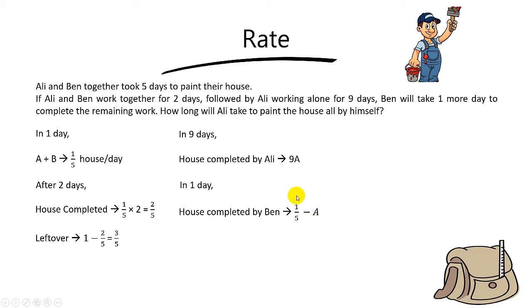And now we know that together, they will complete the leftover which is 3 out of 5. So we can form an equation. And what is the equation? It will be 9A, which is the house completed by Ali in the 9 days.